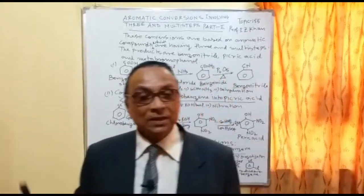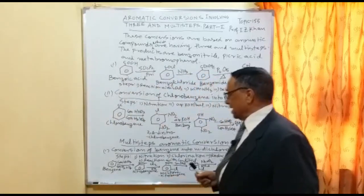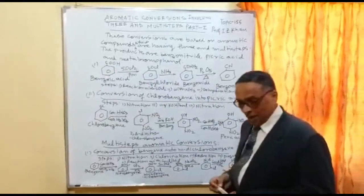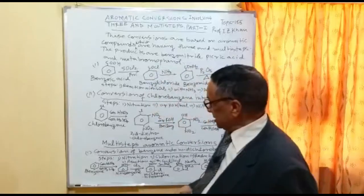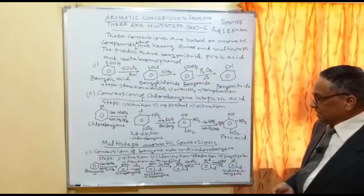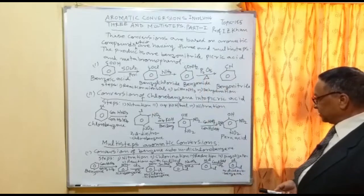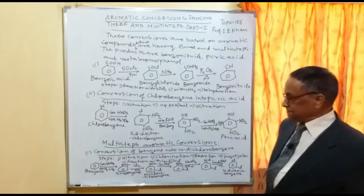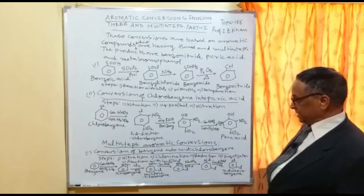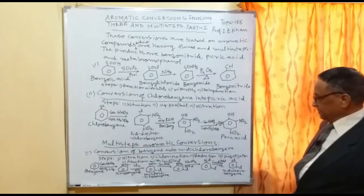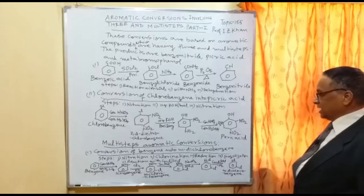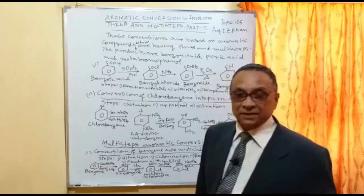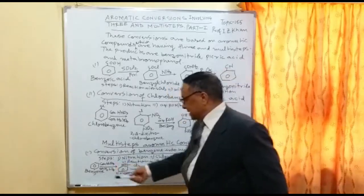Now I am starting multi-step aromatic conversions where more than three or four steps are involved. The first conversion is benzene into meta-dichlorobenzene, which involves five steps. The steps with reagents are: step one — nitration; step two — chlorination in the presence of chlorine; step three — reduction; step four — diazotization; and step five — reaction with copper chloride in the presence of HCl.